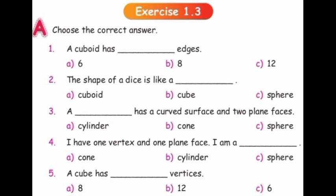Choose the correct answer. A cuboid has how many edges? The answer is 12. The shape of a dice is like a what? The answer is cube. A what has a curved surface and two plane faces? The answer is cylinder. I have one vertex and one plane face. I am a what? The answer is cone.